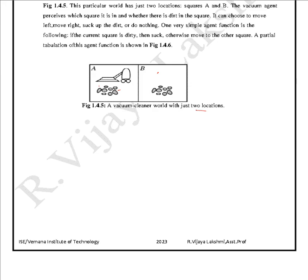The vacuum agent uses sensors to check whether there is dirt in the square. It can choose to move left or right, suck up the dirt, or do nothing. One very simple agent function is: if the current square is dirty, suck the dirt; otherwise, move to the other square. This is the function, and now we need to write it as a program.